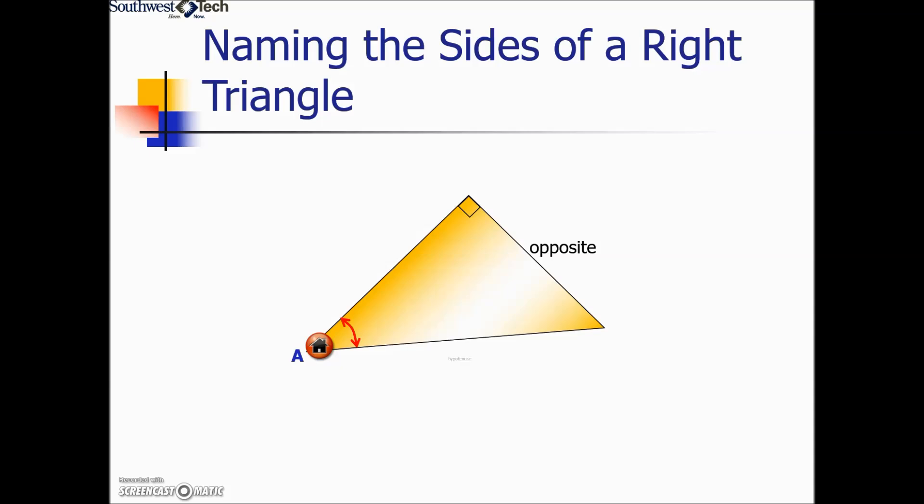The hypotenuse is the side opposite the right angle, and the remaining unlabeled side is the adjacent side. You will find further practice on labeling the sides of a right triangle on page 11.